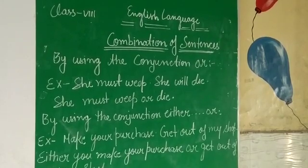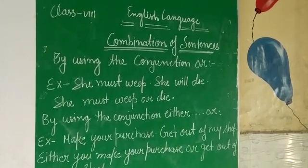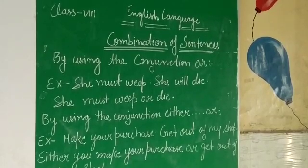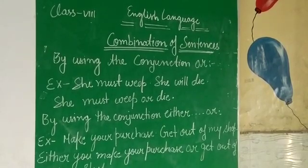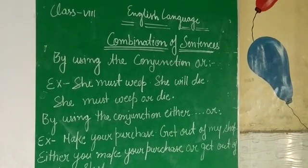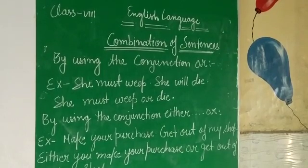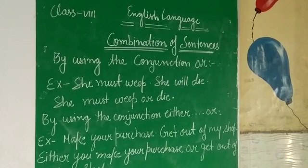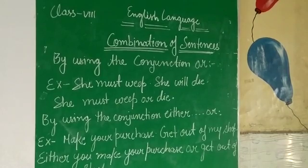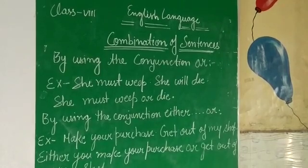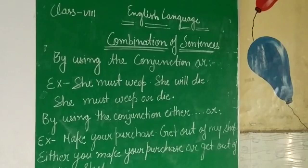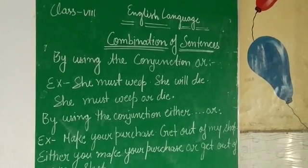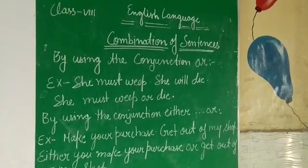Some more examples. Number one: the king must attend the ceremony. The queen must attend the ceremony. Two simple sentences. Combined: either the king or the queen must attend the ceremony.